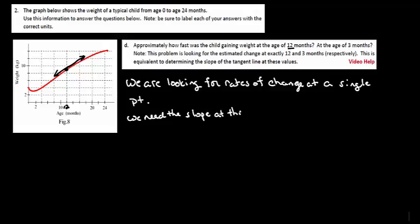Because the slope of that tangent line tells us exactly how fast the baby's weight is changing at that exact moment in time. So the tangent line gives us an instantaneous rate of change, whereas the secant line gives us an average rate of change.